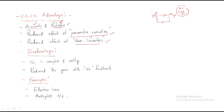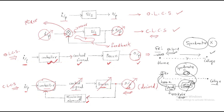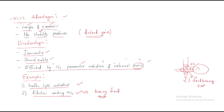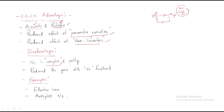The closed-loop control system also has disadvantages. First, the system is complex. The system requires supporting measuring elements and a feedback circuit. Whenever extra circuitry is required for feedback, complexity increases and automatically cost also increases.